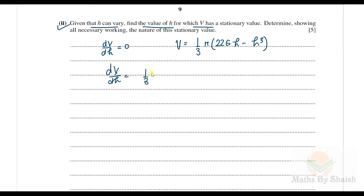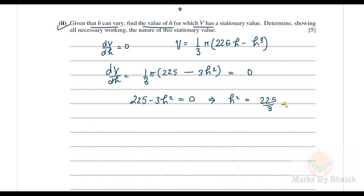Differentiating: dV/dh = (1/3)π(225 − 3h²). Setting this equal to zero for the stationary point gives 225 − 3h² = 0, so h² = 225/3 = 75. Therefore h = √75. We take the positive root since h cannot be negative, and √75 = 5√3. This is the height h at which V has a stationary value.